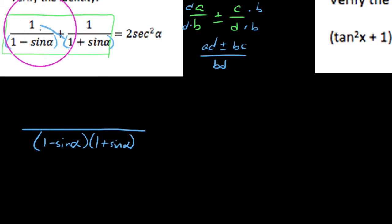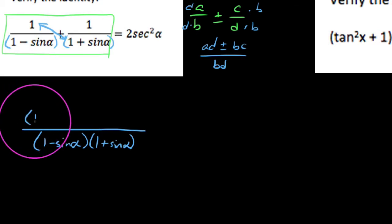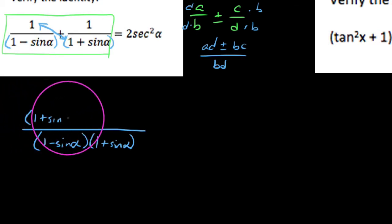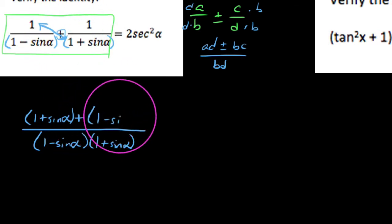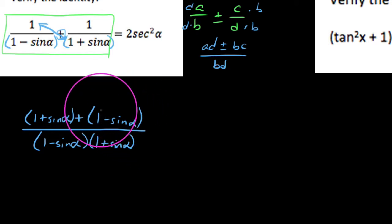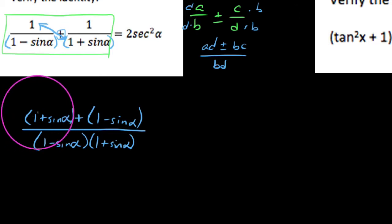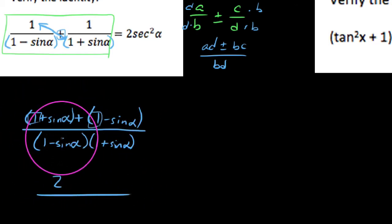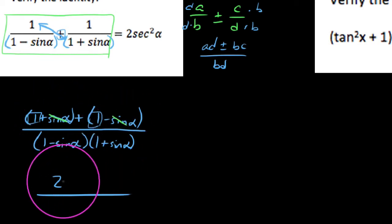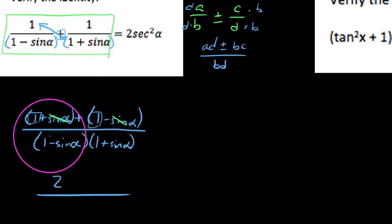Up top, I need to take this one's denominator times this one's numerator. I get 1 times anything as itself, so I get 1 plus sine of alpha, and this is plus 1 times 1 minus sine of alpha, so I get 1 minus sine of alpha. In terms of the numerator, we're adding these two expressions together, and instantly I notice this 1 and this 1 combine to be a 2. Then positive sine of alpha and negative sine of alpha cancel each other out, so we just get 2 on top.